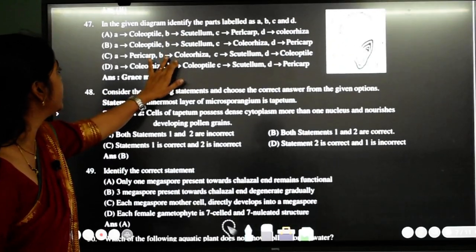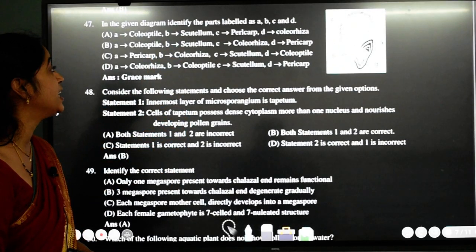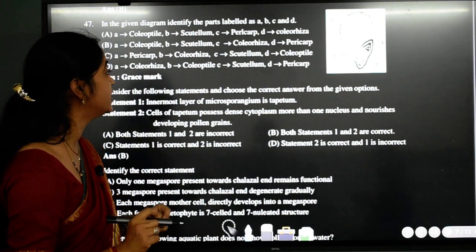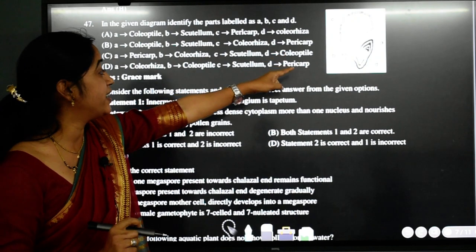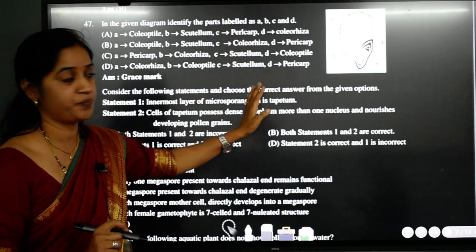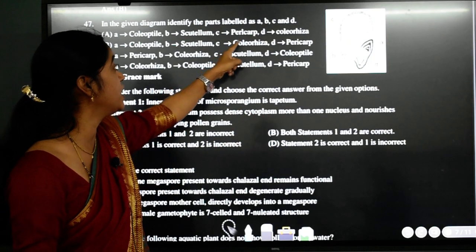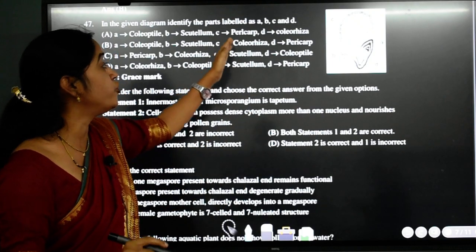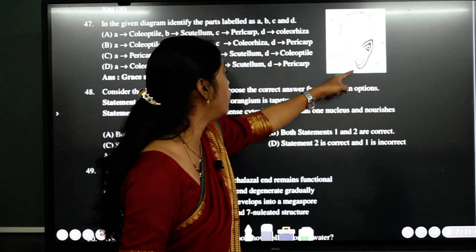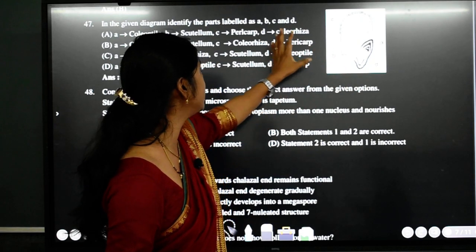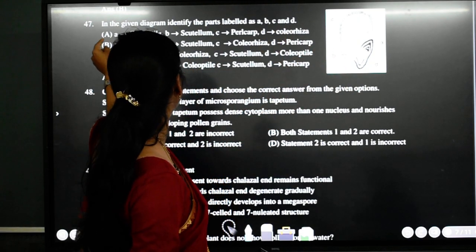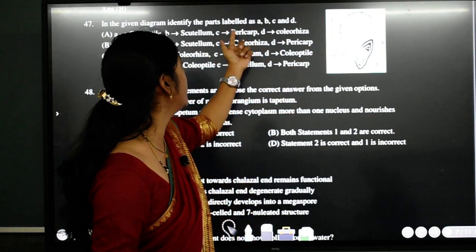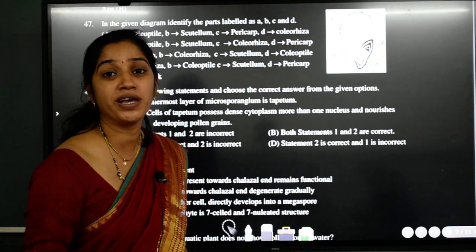Next one. In the given diagram identify the parts labeled as A, B, C and D. See student here, if you see the answers here, this diagram does not actually match with all the options. There is one option they have given wrong. That is pericarp. Pericarp is a part of fruit. It is not a part of seed. So if you leave that, A is coleoptile and D is coleorhiza. So if you match the things, only A will show the two correct matches. This part is called as scutellum. But overall one naming they have given wrong. So you may get grace mark here.